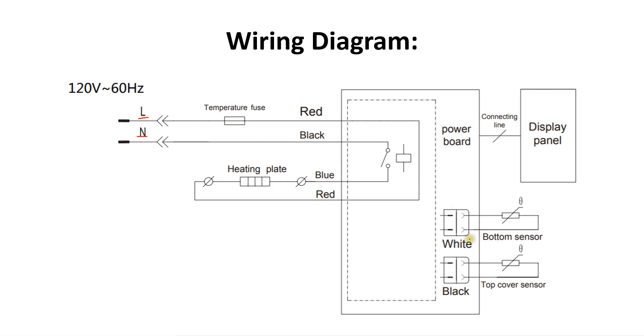Whenever the temperature is low, the control board gives signal to this relay for closing the contact. Then the voltage is applied to the heating plate and the temperature starts rising.